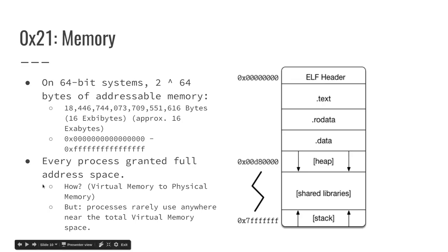Nevertheless, whenever you run a program, every process is actually granted access to the full address space. Has anyone here seen or understands how virtual memory gets mapped to physical memory? Essentially, what ends up happening is you've got a virtual memory address space allocated to every single process that is the full address space. So even if you're on a 32-bit system with only one gig of RAM, every process gets access to four gigs of address space per process.